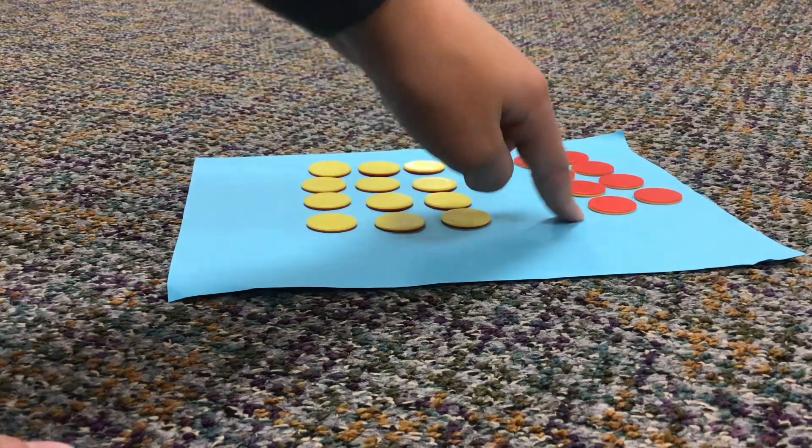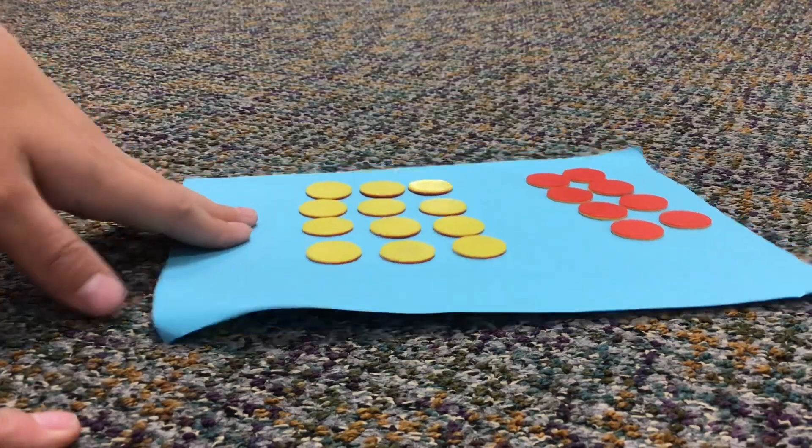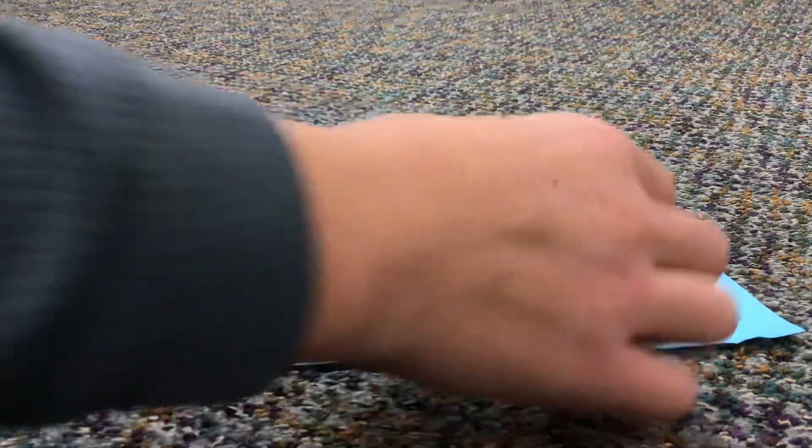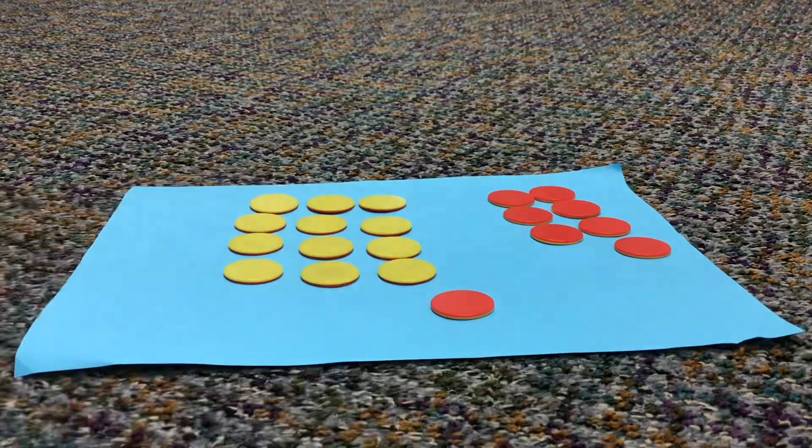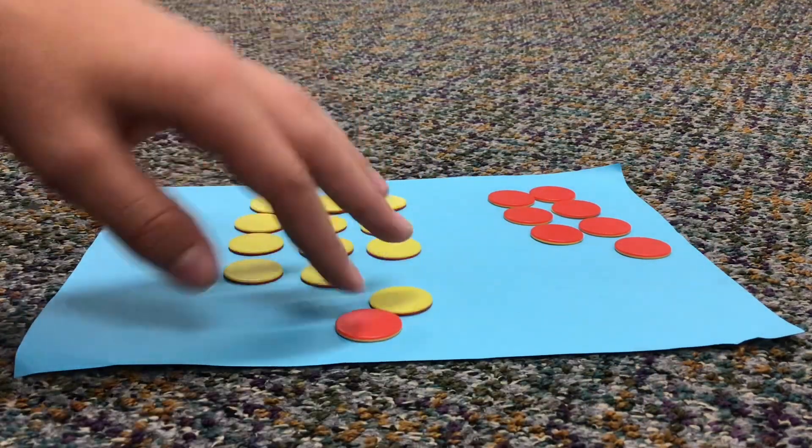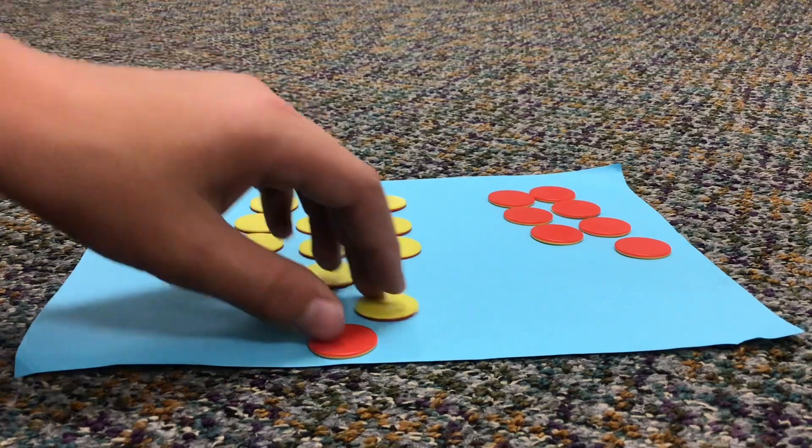So if you have negative 8 chips and you have 12 positive chips and you add them together, you have one negative chip that would go with this positive chip and that would equal zero.